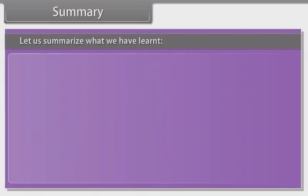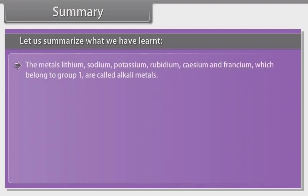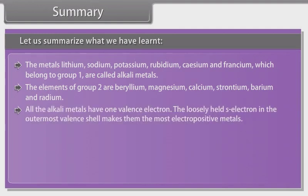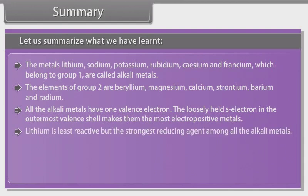Summary. The metals lithium, sodium, potassium, rubidium, cesium and francium, which belong to group 1, are called alkali metals. The elements of group 2 are beryllium, magnesium, calcium, strontium, barium and radium. All the alkali metals have one valence electron. The loosely held S-electron in the outermost valence shell makes them the most electropositive metals. Lithium is the least reactive but the strongest reducing agent among all the alkali metals. Potassium is an important enzyme activator and plays an important role in nerve action and cardiac function.